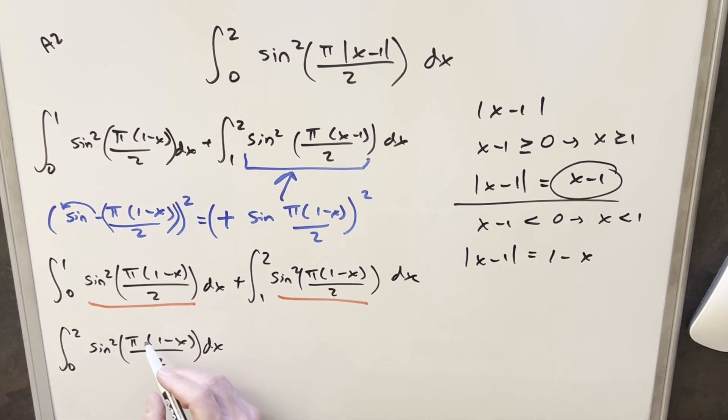What I'm going to do here is really not much. I'm just going to distribute in this pi over 2 into this to rewrite this in a different form. So we'll write this from 0 to 2, sine squared, and then we'll write it as pi over 2 minus pi over 2 x, dx.